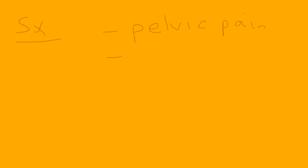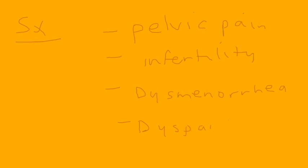Now let's get into the symptoms of endometriosis. You can have pelvic pain, infertility — which is actually a huge problem — dysmenorrhea, which is pain during menstrual flow, and dyspareunia, which is pain during sexual intercourse. These symptoms together are pretty diagnostic of endometriosis.